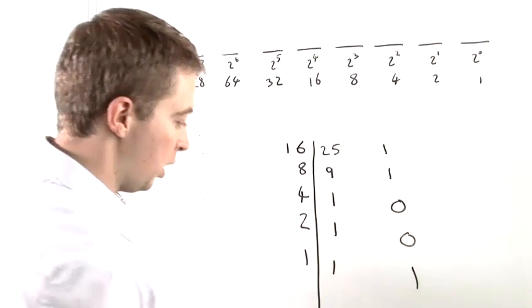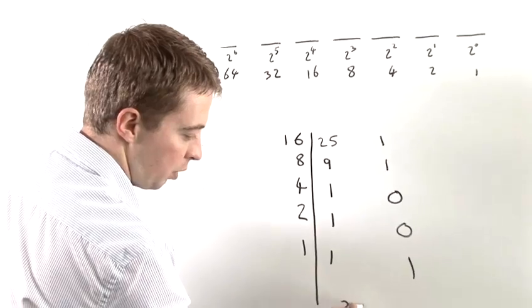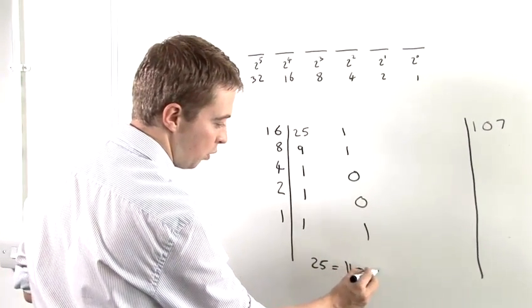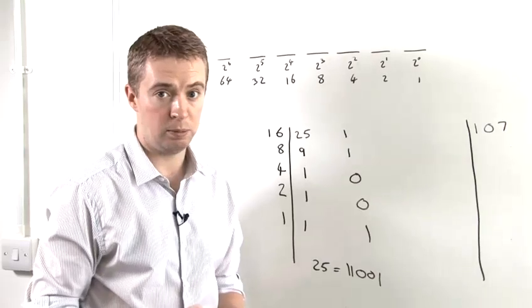So we have our number here. This tells us that 25 in decimal is equal to 1, 1, 0, 0, 1 in binary.